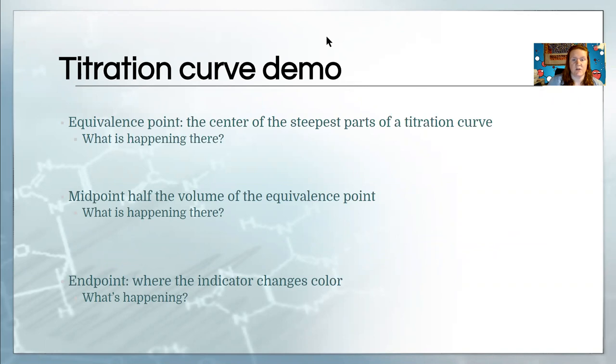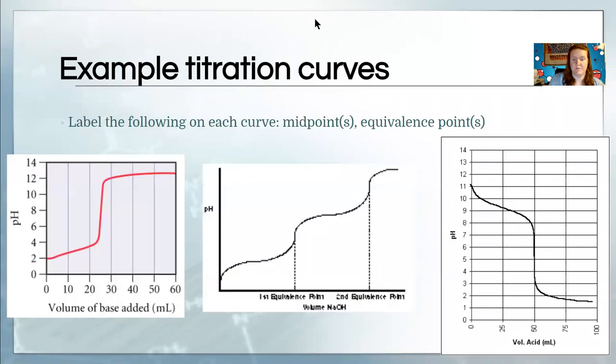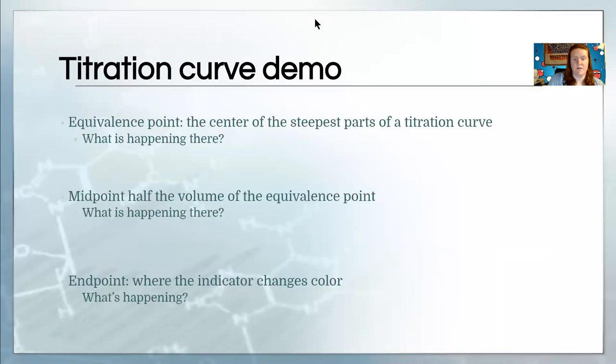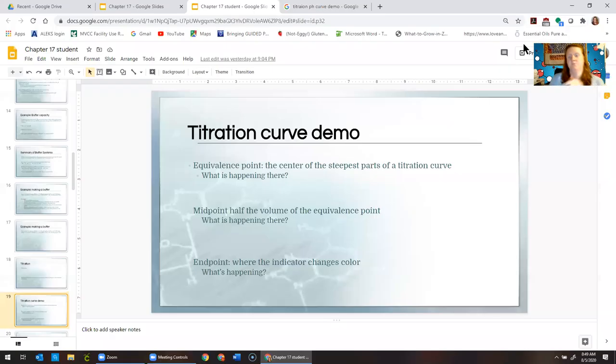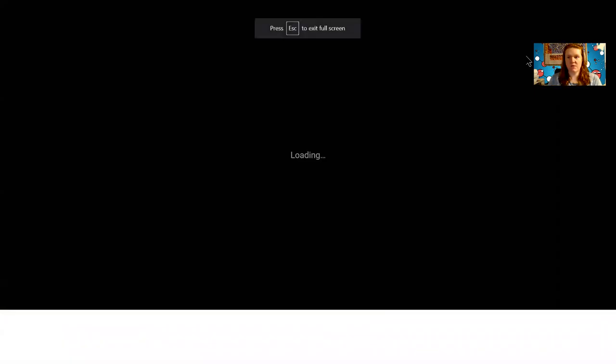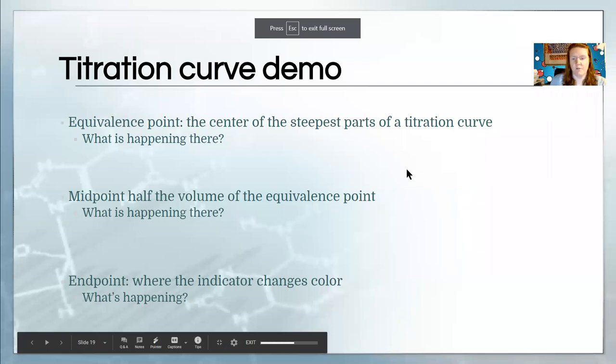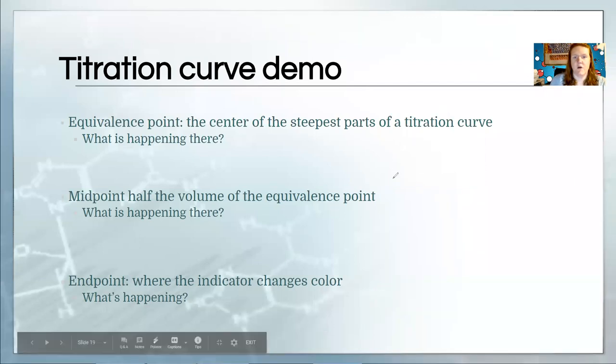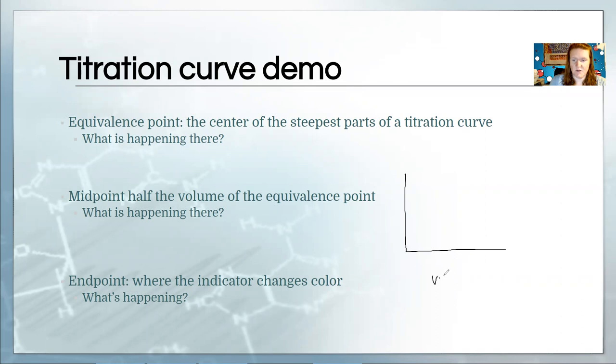When you do a titration curve, we have three different characteristics, sort of like positions in the curve that are important. So what you're going to see here is you always are going to plot the amount of base on the x-axis, usually as a volume.